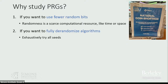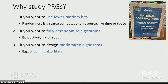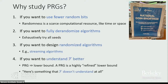Pseudorandom generators can be useful for designing deterministic algorithms too, because basically the trick is that you can exhaustively try all seeds to the pseudorandom generator. Ironically, pseudorandom generators also sometimes have applications to the design of randomized algorithms. And probably the most important application is that every time we design a pseudorandom generator that fools some model of computation F, that teaches us something about that model F. It gives us insights into its limits and abilities, because a pseudorandom generator is basically a particularly high-quality type of lower bound — giving an example of some task that the model of computation cannot understand at all.